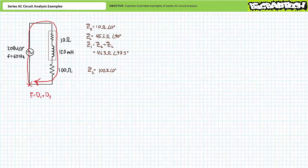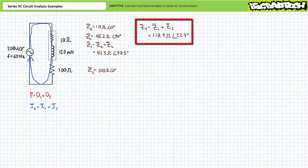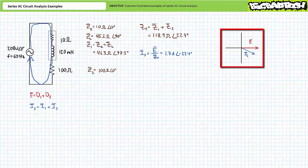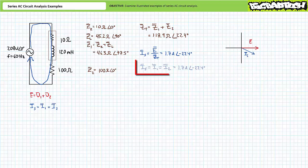A Kirchhoff's Voltage Law analysis of the loop suggests that E equals V1 plus V2. Given there is a single path for current, source current IS equals I1, which equals I2. This time, let's solve for total impedance first. Z1 plus Z2 yields a total impedance of 118.9 ohms at an angle of 22.4 degrees. Application of Ohm's law — supply voltage over total impedance — demonstrates that source current will be 1.7 amps at an angle of negative 22.4 degrees. The phasor diagram illustrates that source current appears to lag supply voltage by 22.4 degrees. Given this is a purely series circuit, IS equals I1, which equals I2, which equals 1.7 amps at an angle of negative 22.4 degrees.